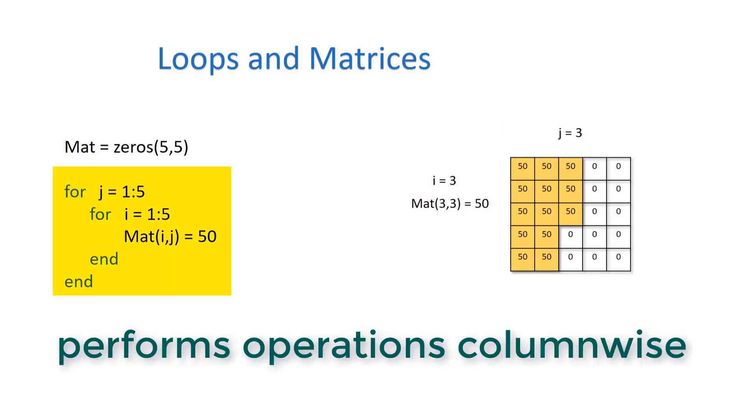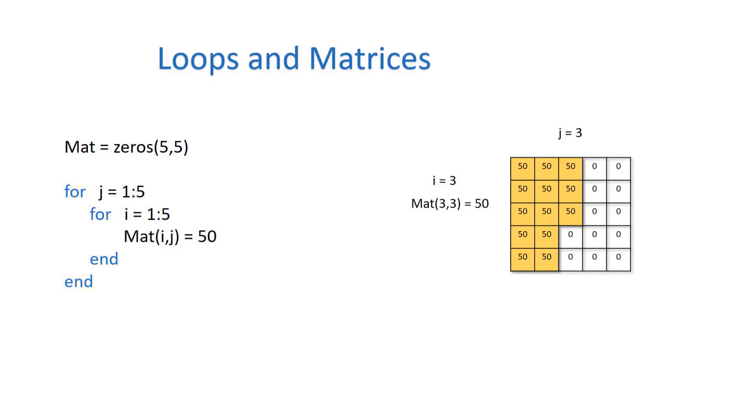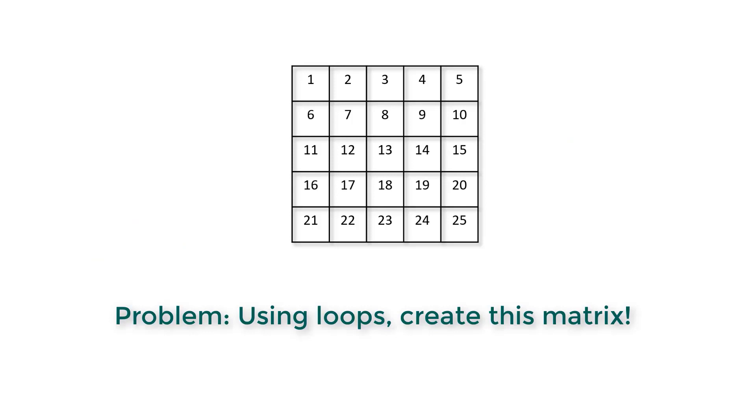Now that we established that variable i is used for rows and j is used for columns, let's try to solve this problem. You need to create a 5 by 5 matrix with this pattern. The first step is to identify the pattern. The values are increasing row-wise and it's a running sum: one, one plus one is two, two plus one is three, and so on.